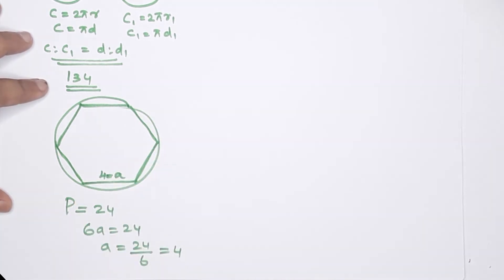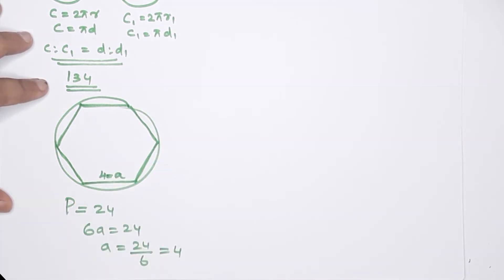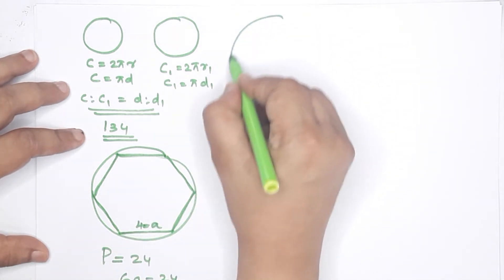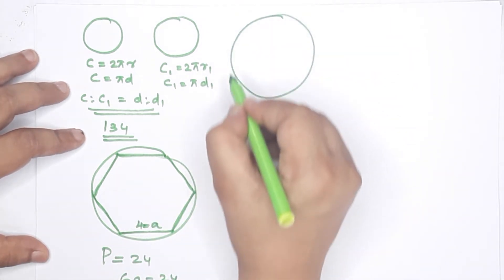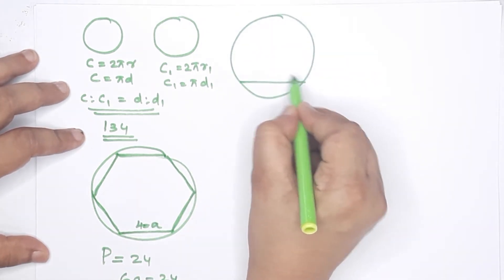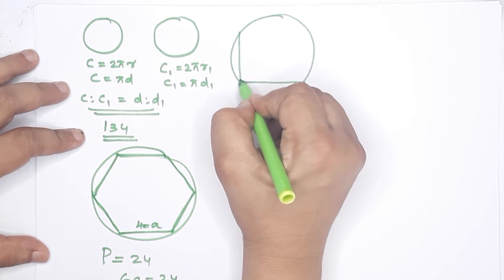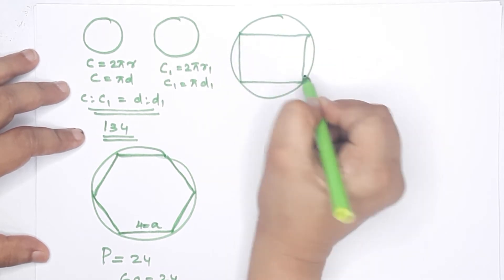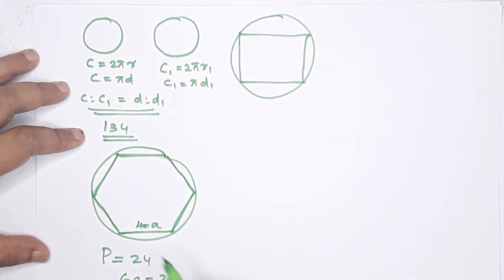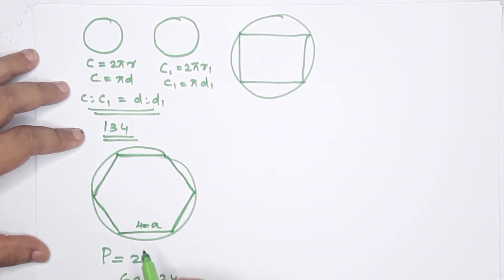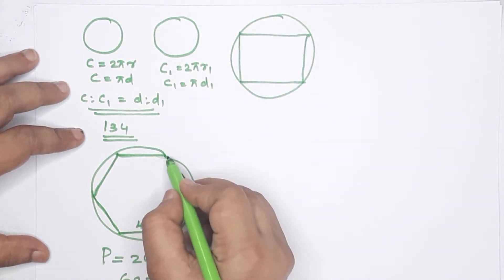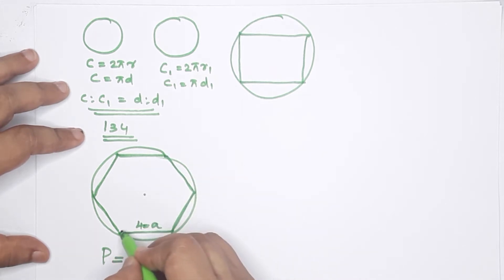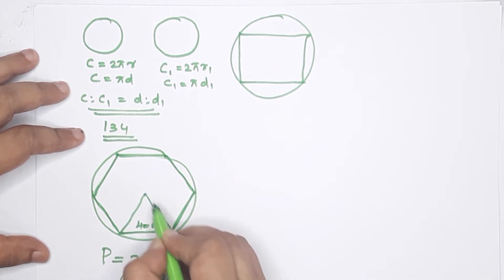It is the same circle. This is the same circle. Now we draw the square inscribed in the circle. We will join the vertices to form the regular hexagon and the square. The two lines will make the square with the same center.